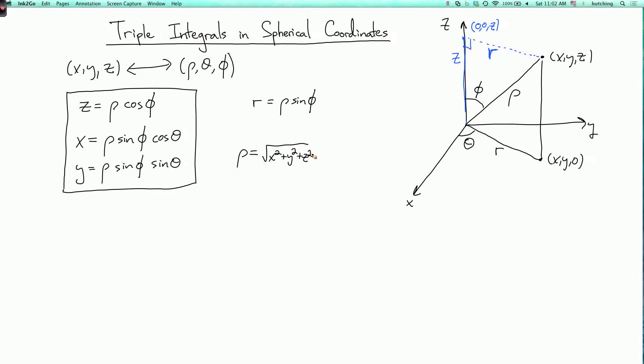Now what are the ranges of these coordinates? Well, we're going to require that phi goes from zero to pi. So phi equals zero corresponds to the positive z-axis. And phi equals pi corresponds to the negative z-axis. And we'll also only consider rho greater than or equal to zero. So rho is the distance from the origin.